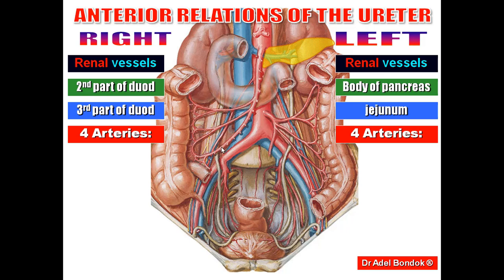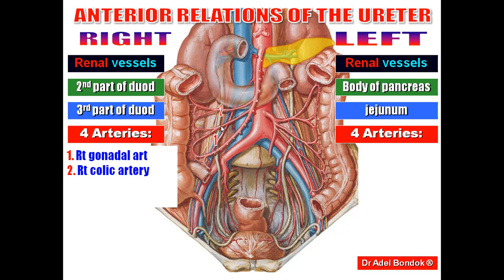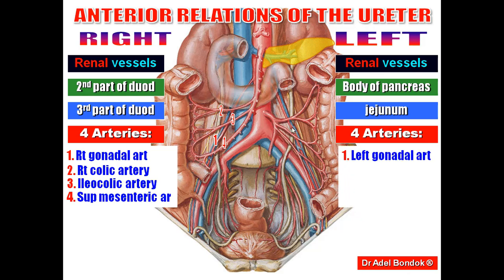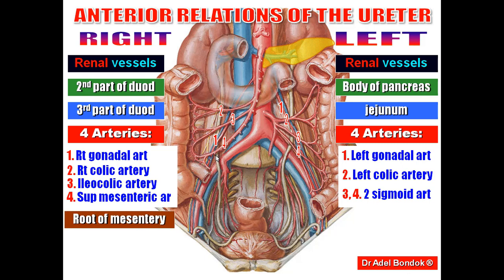The four arteries crossing in front of the right ureter are the right gonadal artery and the superior mesenteric artery. On the left side, the four arteries are the left gonadal artery, left colic artery, and the two sigmoid arteries. Then the right ureter is crossed by the root of the mesenteric artery, and on the left side by the sigmoid mesocolon.